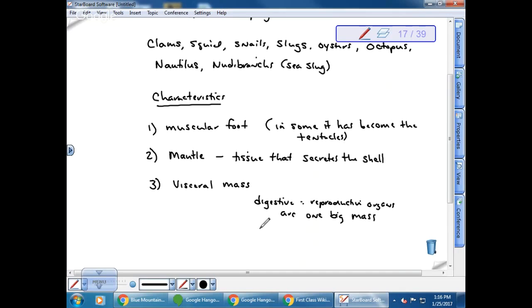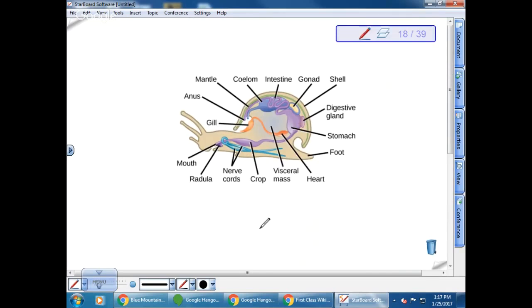If we look at the different groups, we can see how they have diverged from the ancestral form and have become more or less complicated. This is your typical mollusk, and this is a picture from your book. This would be like a snail. We have the muscular foot, and in this case they use it for moving around. In green is the mantle which secretes the shell. And then notice we have this intestine and stomach and digestive organs, and that is the visceral mass, that big structure right there.